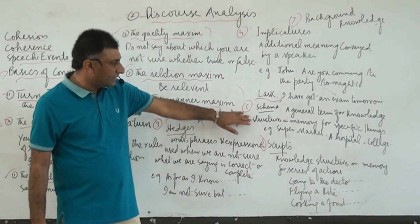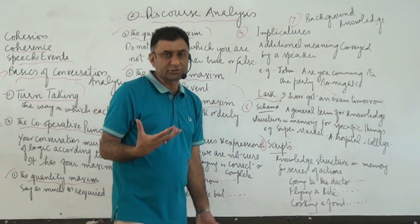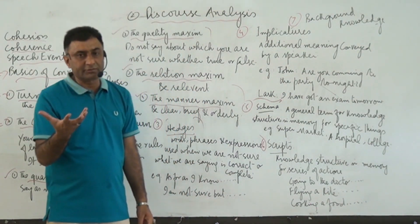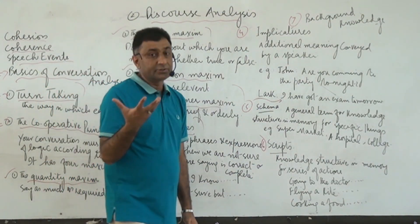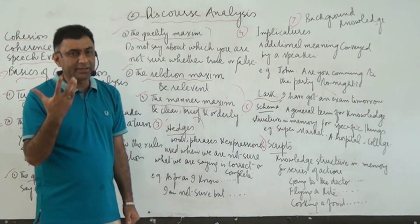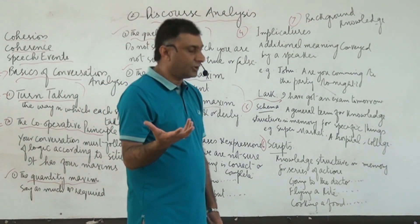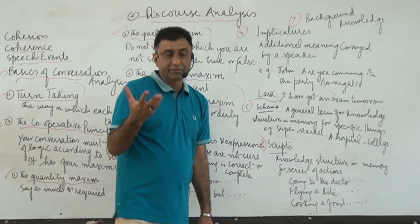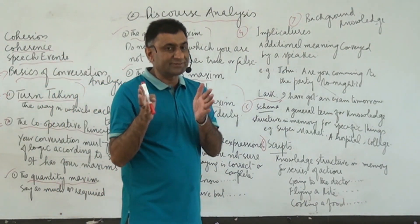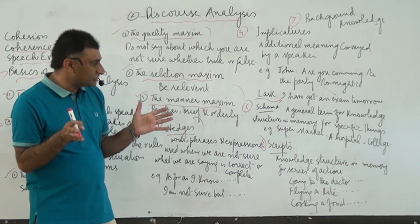Schema is a general term for knowledge, structure, and memory for specific things. Specific things are those which are important — for example, names of markets like a supermarket, names of hospitals, schools, colleges, and different institutions. All those things which are specific in their nature we have to keep in mind, and this is called schema.